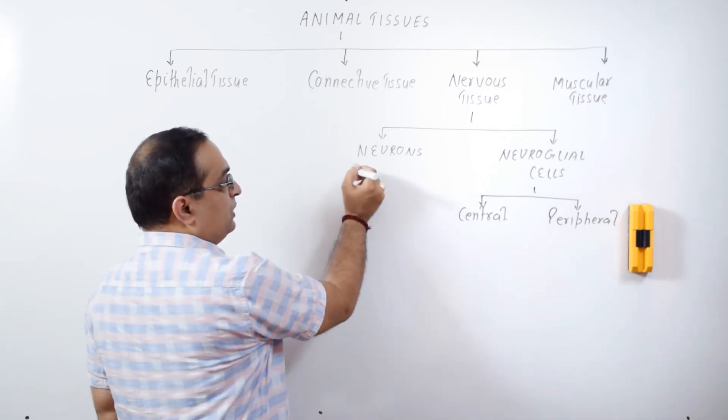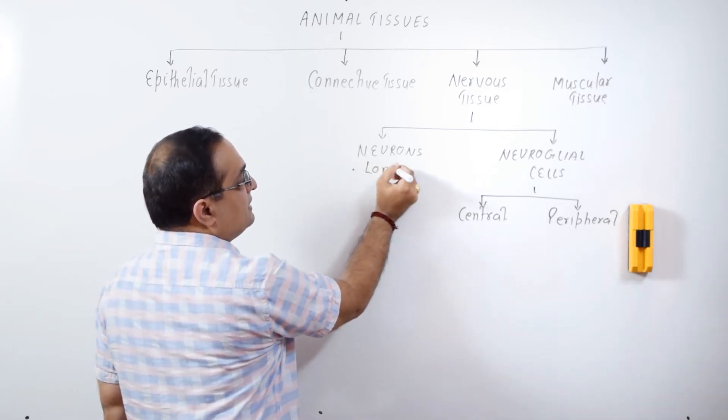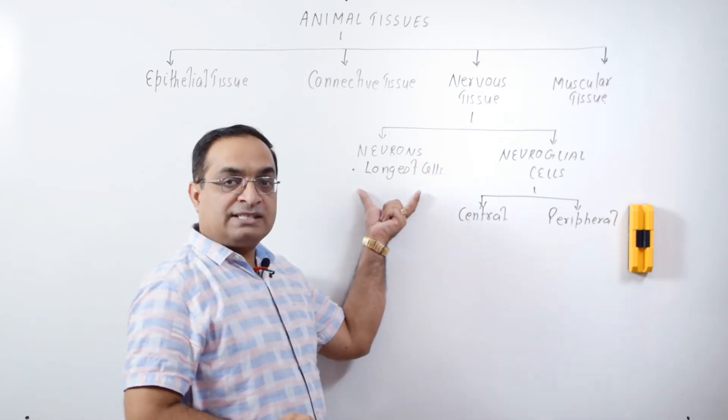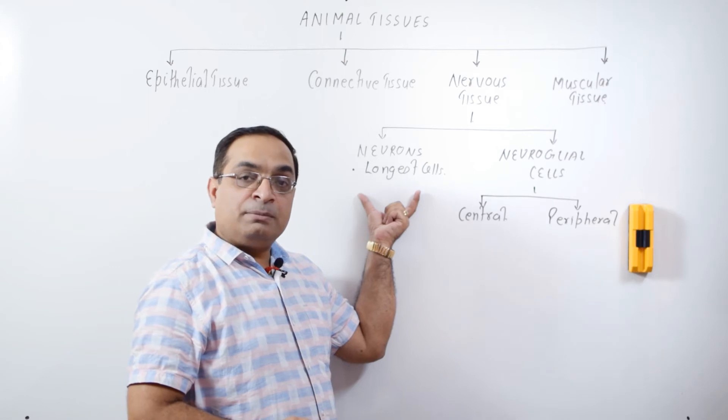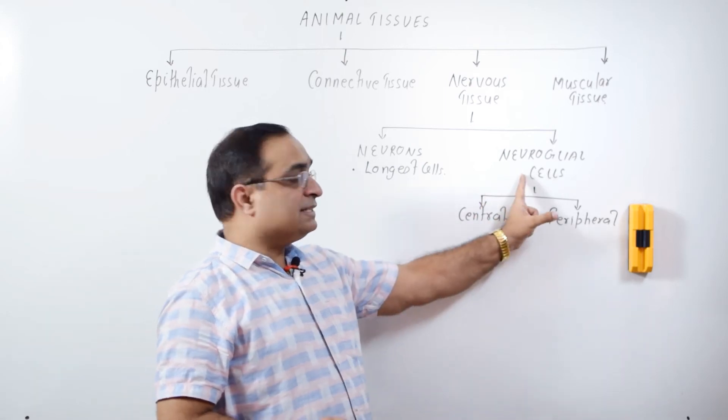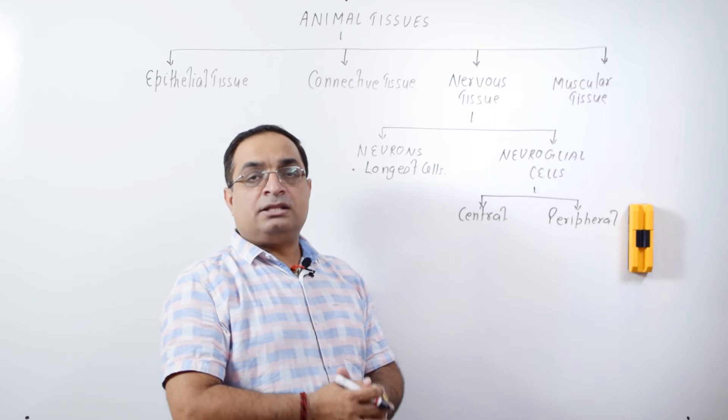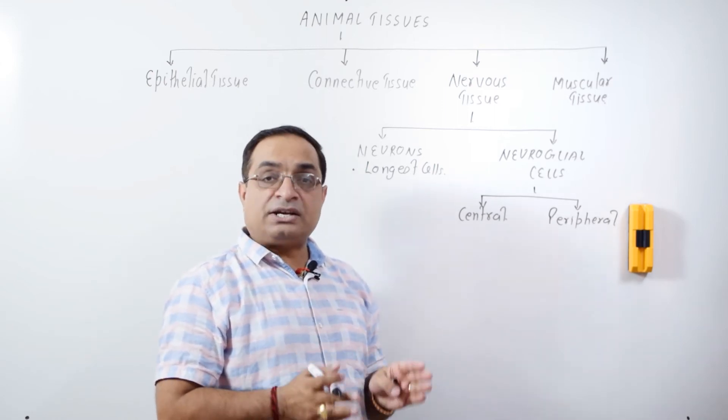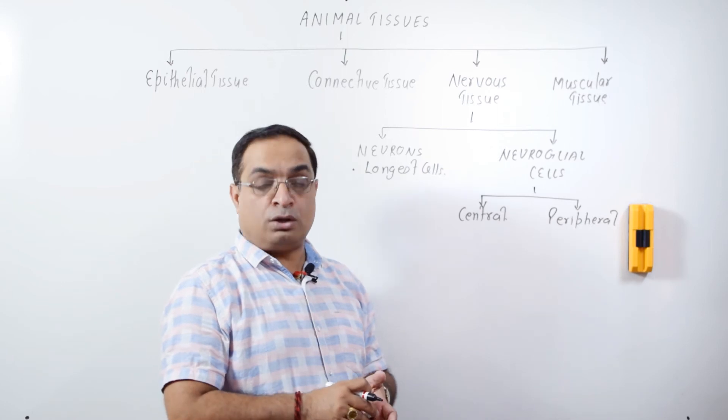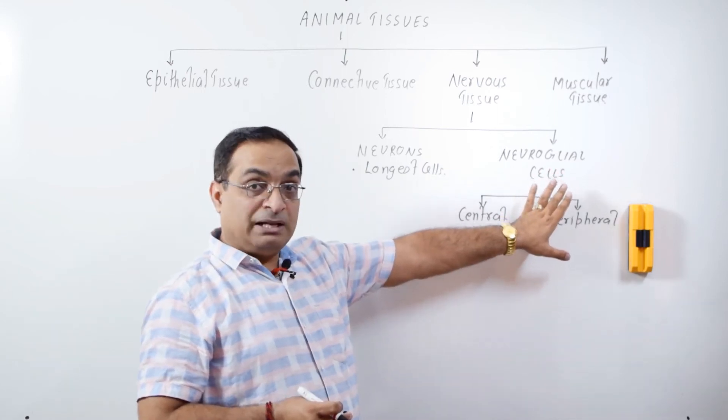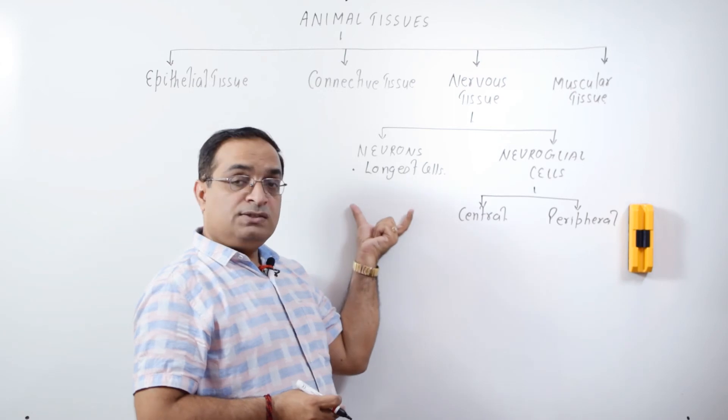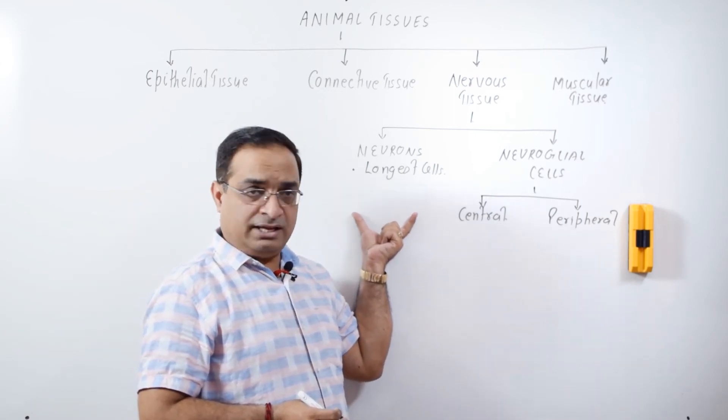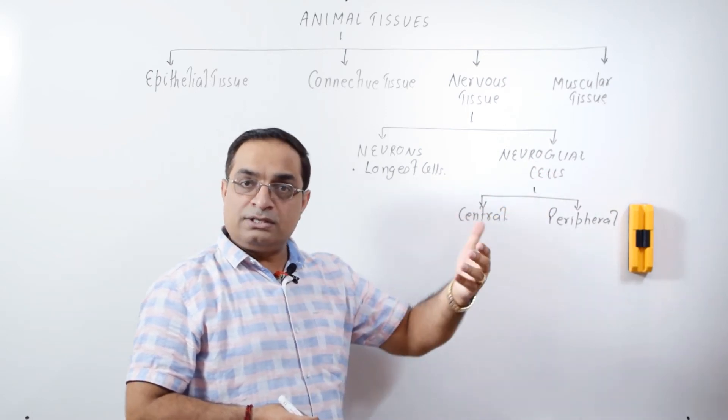Neurons which are the longest cells in the body. Please remember, Neurons are the longest cells. These carry nerve impulses. Neuroglial cells do not carry nerve impulses. These are responsible for providing structural support, protection and nutrition to neurons. These do not conduct impulses. Neurons conduct impulses and these do not have the ability to divide. Neuroglial cells have the ability to divide.